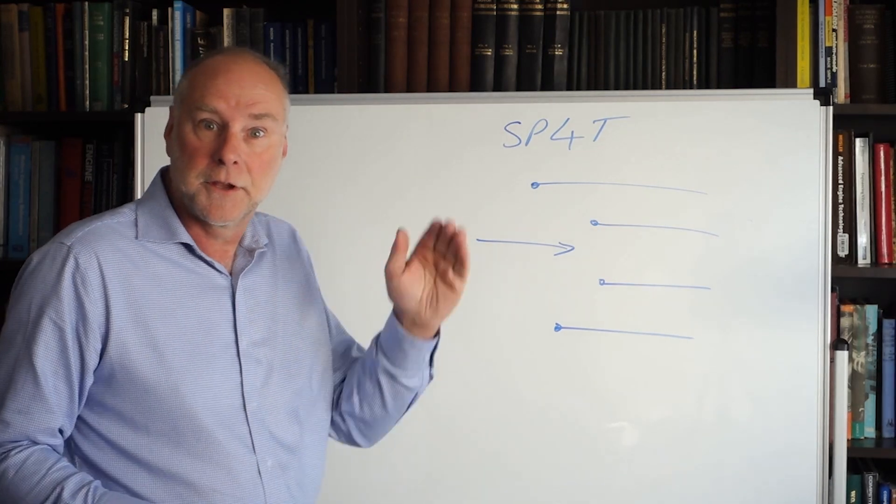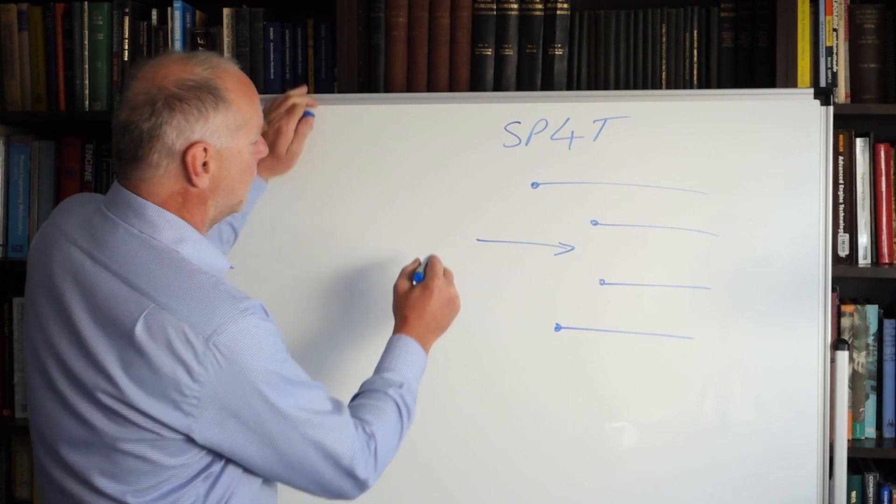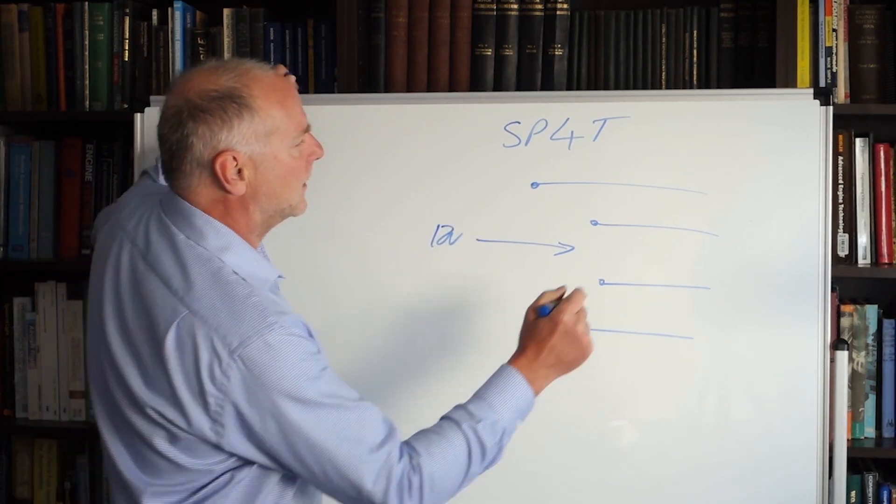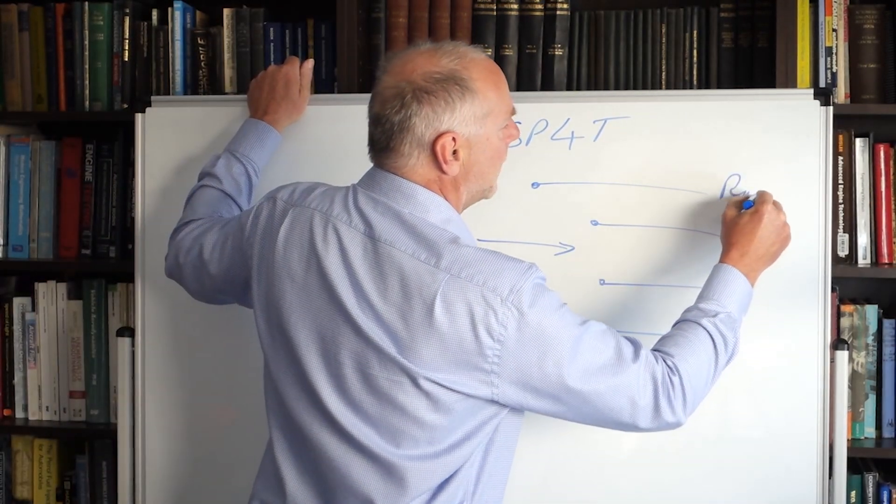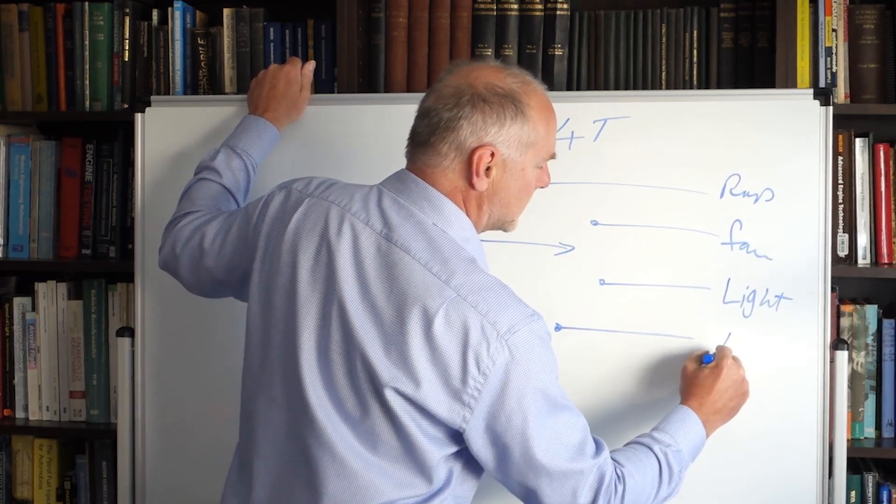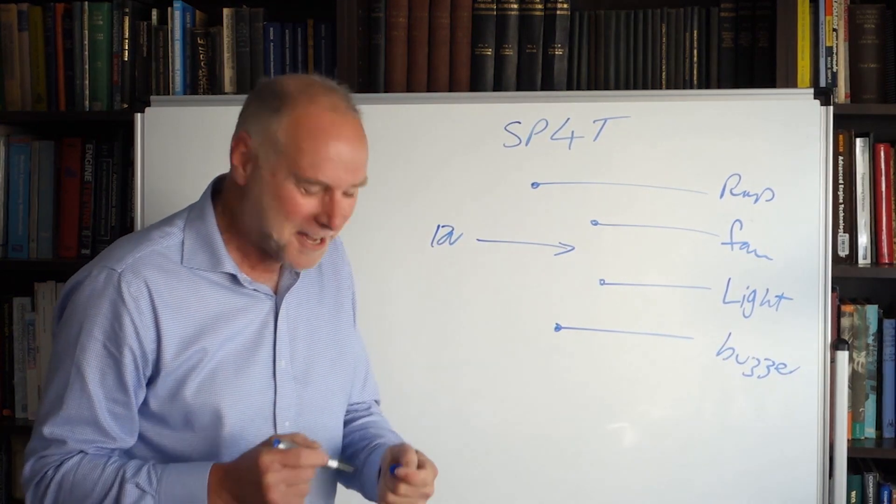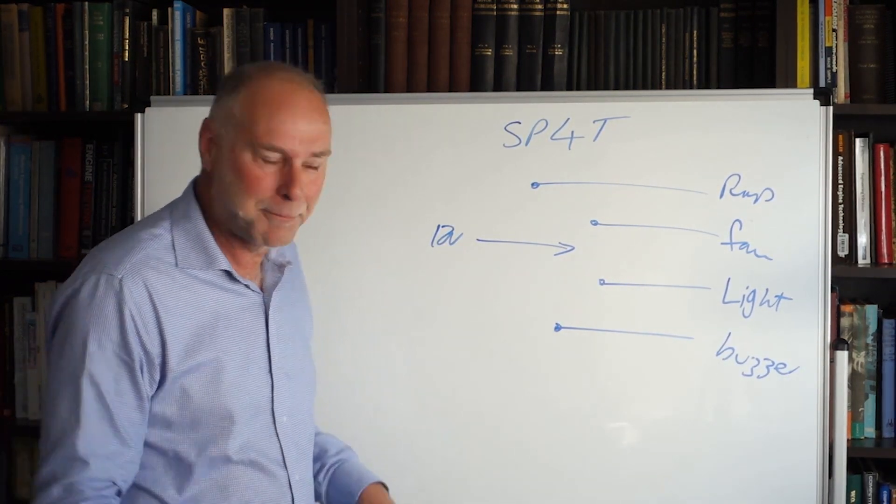Eight throws. So you can switch eight different circuits. Now what might they be? Well if we put 12 volts there and if we put a pump there and we put a fan there and we put a light there and we put a buzzer there. And if you're thinking why on earth would you do all this? I don't know. I'm just using it as an example.